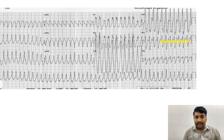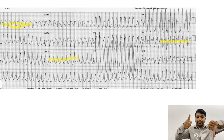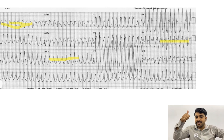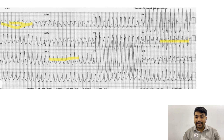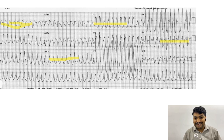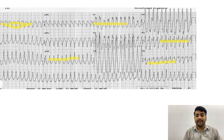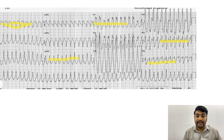Step four examines the morphology: the bundle branch block pattern should not look like VT. Looking at the axis, lead I is pointing downwards but lead AVF is pointing upwards — this is right axis deviation. Looking at V1 and V6, this is a right bundle branch block morphology. So this is SVT with aberrancy, where aberrancy is present when there is some bundle branch block. At the final step we declare this ECG is SVT with aberrancy.